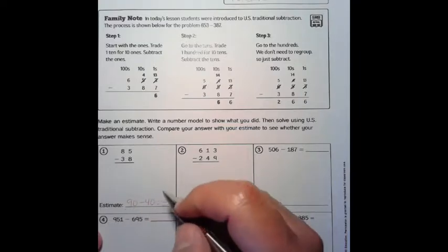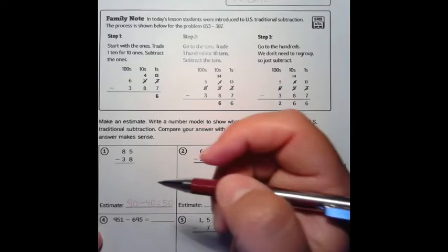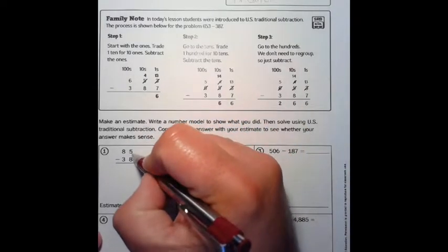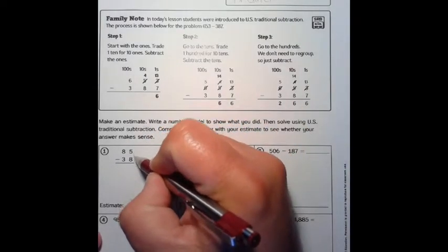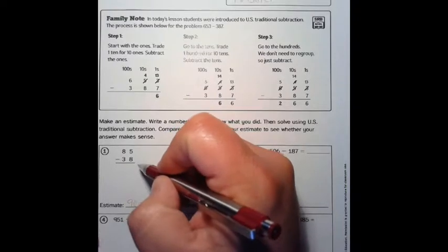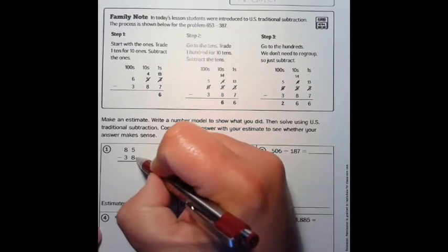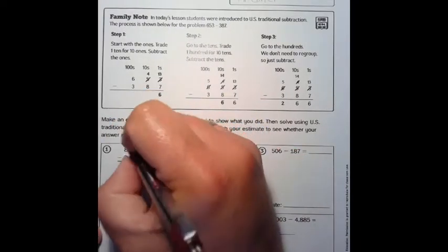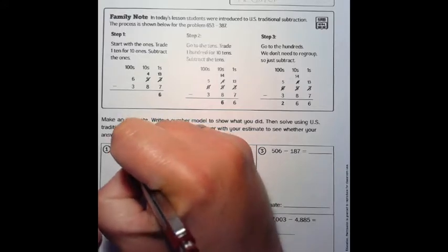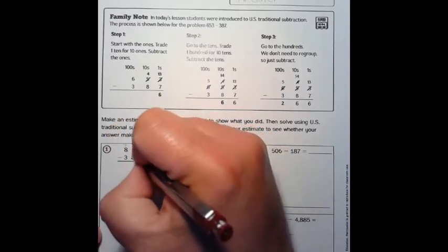from 40 to get to 90 by tens if you need to. Now we're going to subtract. We always start with our ones place, and we're doing 5 take away 8. We can't do that, so we've got to trade. We're going to take this 8, trade it, and make it a 7.